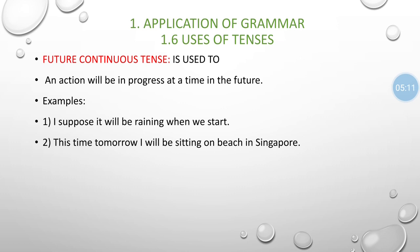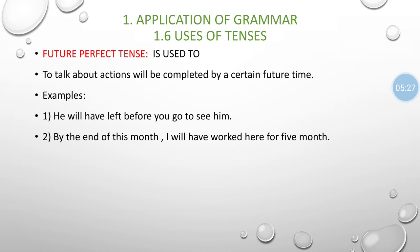The structure of future continuous tense is: Subject + will be / shall be + verb + ing + Object. For example: 'I will be sitting on a beach at Singapore.'